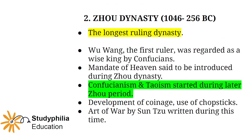Moving on, the Chou dynasty was the longest ruling dynasty of China — please note that. Wu Wang was the first ruler and he was regarded as a wise king by the Confucians. The Mandate of Heaven, known as Tianming in Chinese, was said to be introduced during the Chou dynasty. It was the divine source of authority that the rulers of China believed they had to rule the kingdoms — essentially, it was considered a divine right to rule.